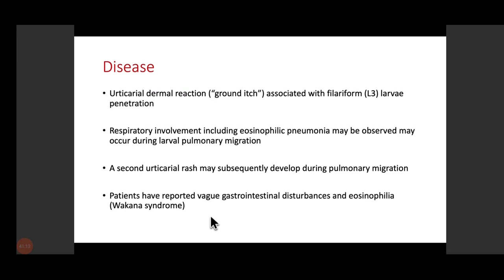Disease manifestations include: a local urticarial reaction (ground itch) when filariform larvae penetrate the skin; eosinophilic pneumonia when larvae migrate through the lungs; urticarial rash during pulmonary migration; and when lodged in the gastrointestinal tract — vague GI symptoms and eosinophilia — known as Wakana syndrome, seen with Ancylostoma or Necator americanus.